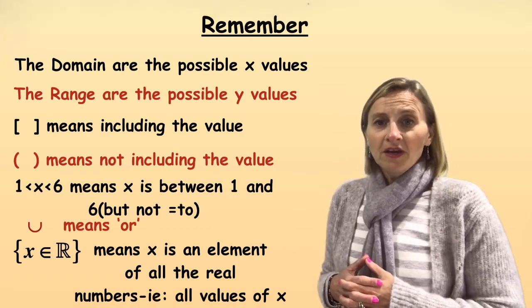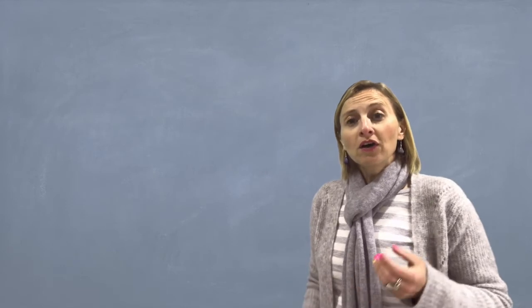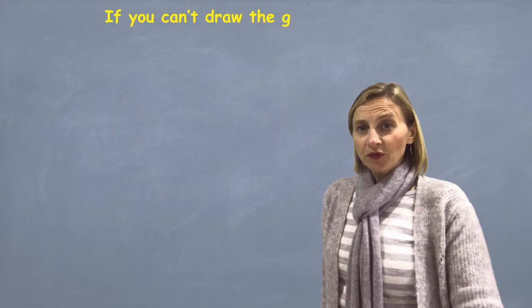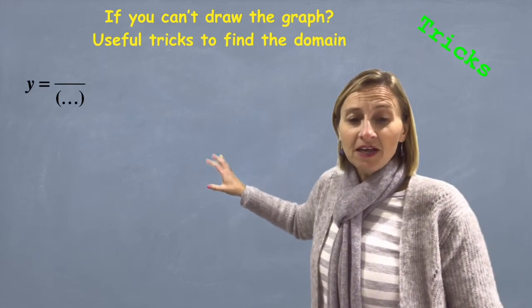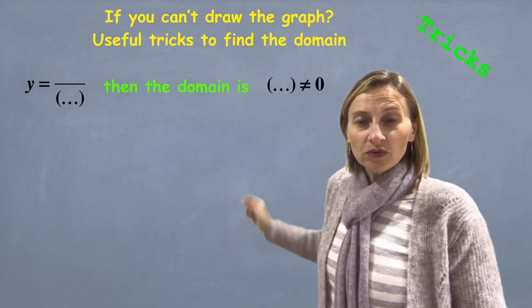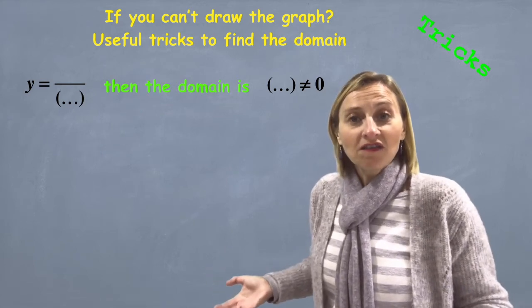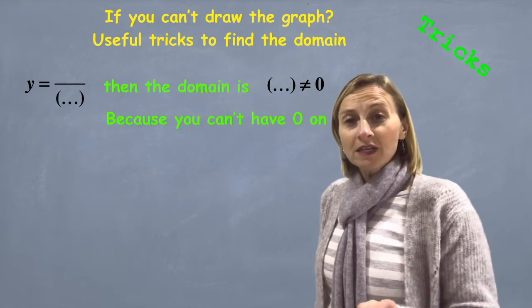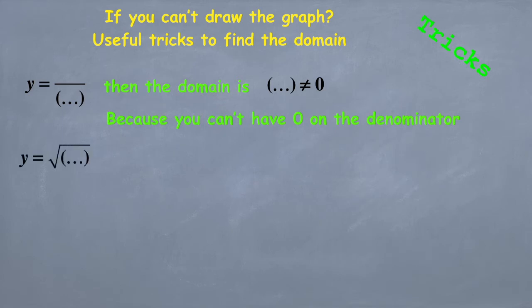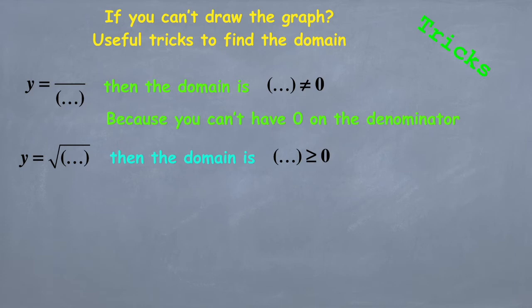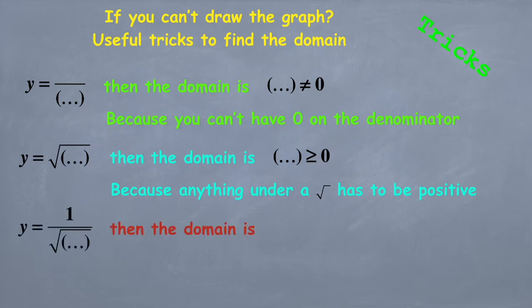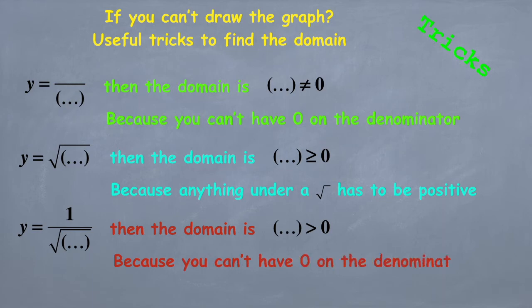Now let's think: what if you can't draw the graph? There are some useful tricks for finding the domain. If you have 1 over something in brackets, then the domain is: whatever's in those brackets can't equal 0, because the denominator in a fraction can never equal 0. If you have y equals the square root of something, then whatever's under the square root has to be greater than or equal to 0 — and you would solve that for the domain. And if we have y equals 1 over the square root of something, then whatever's under the square root has to be greater than 0, because it has to be ≥ 0 as it's under a square root, and it also can't equal 0 because it's on the denominator.